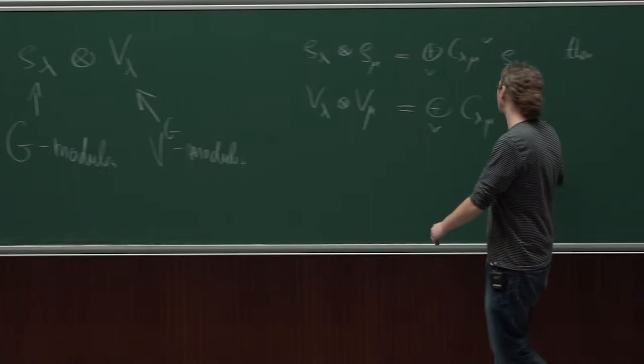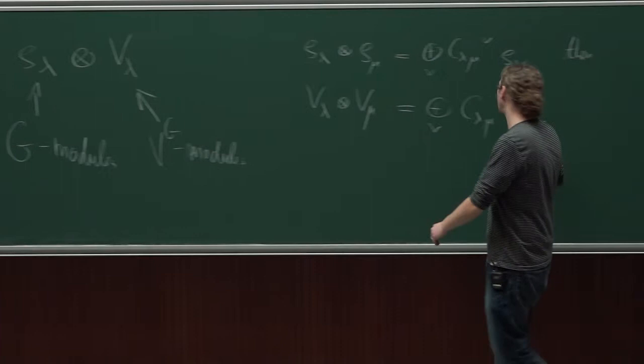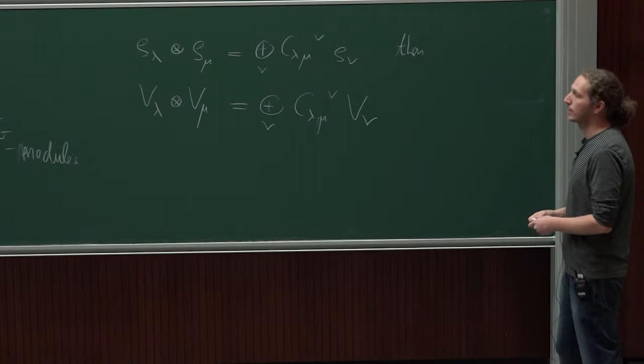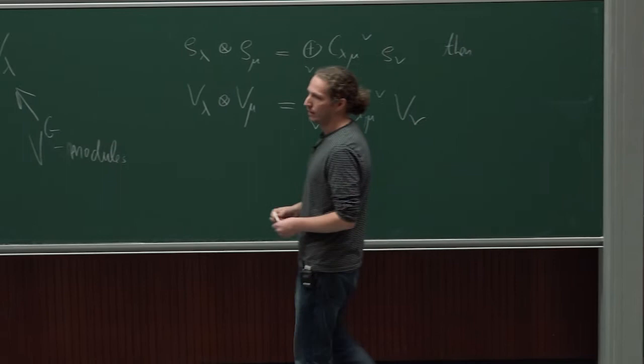Just the orbifold decomposition already gives us fusion rules for free — they are just group-like. They are just the same fusion rules as in the representation ring of G modules. So this is something the orbifold gives you for free: certain fusion rules.